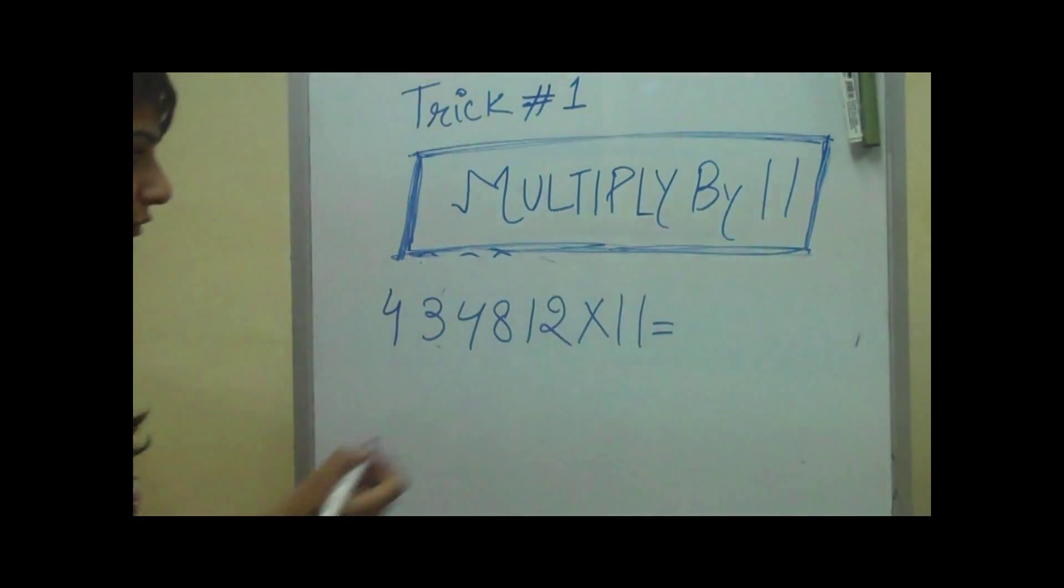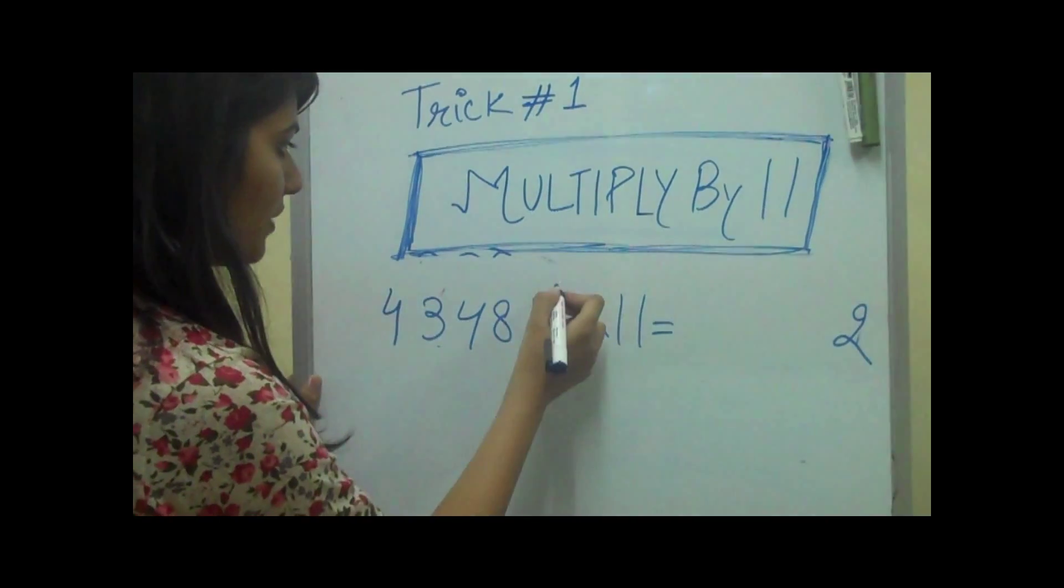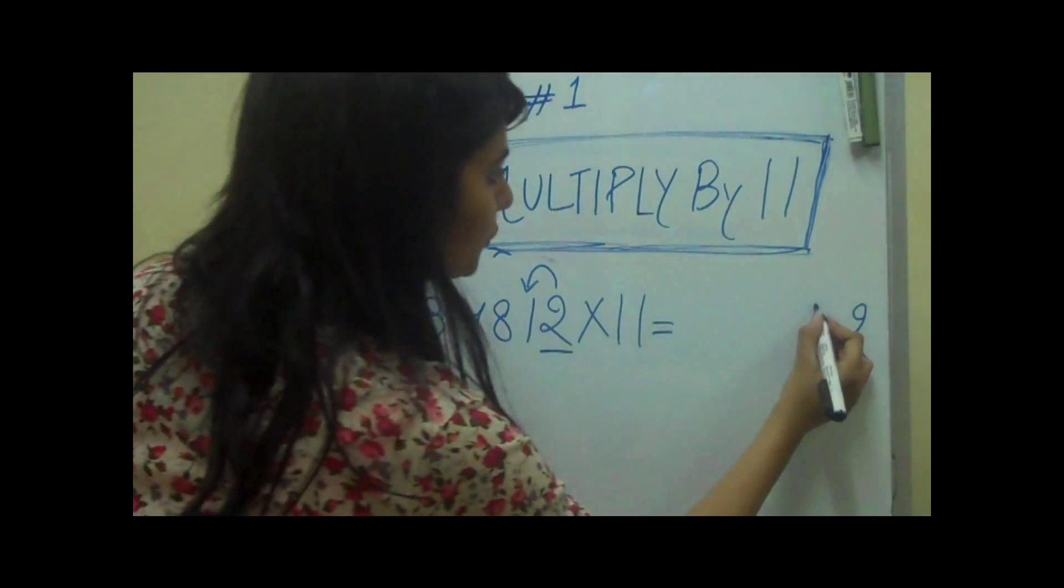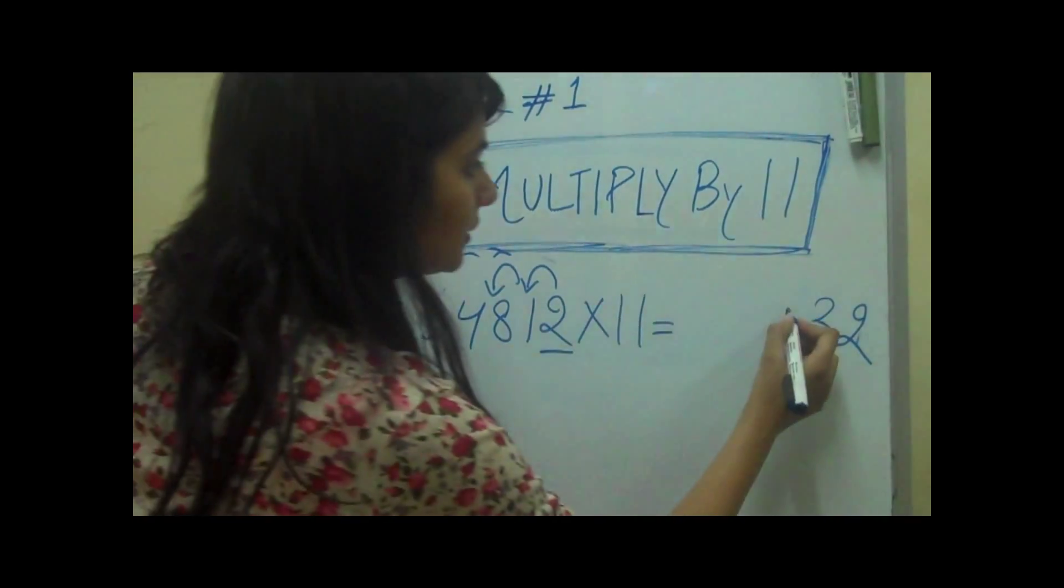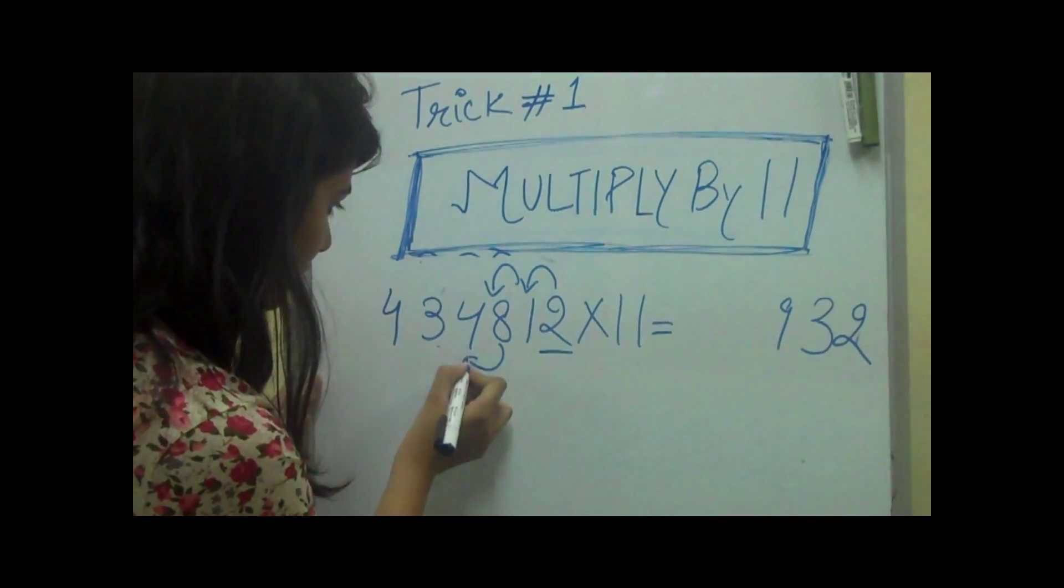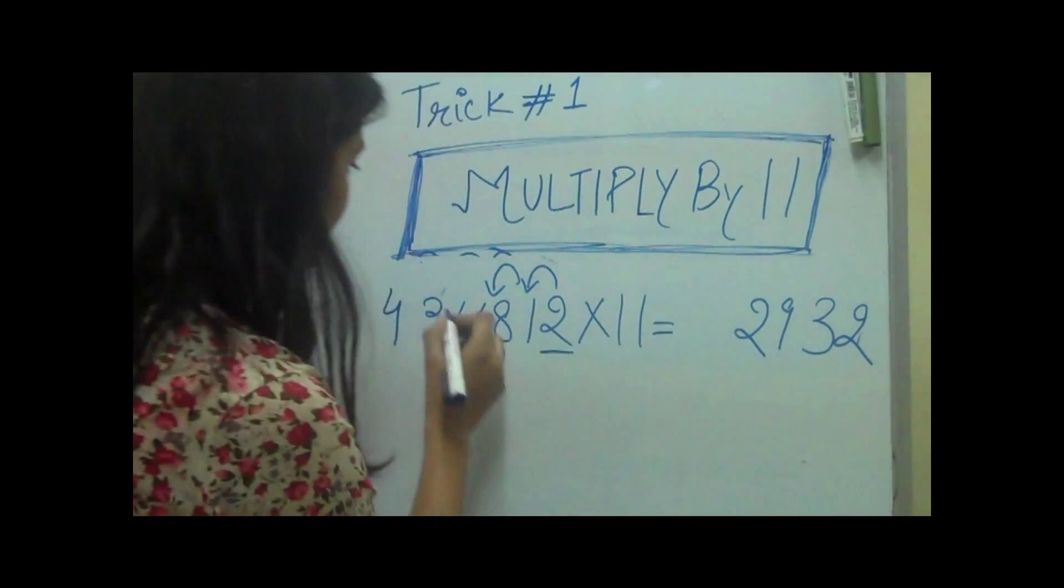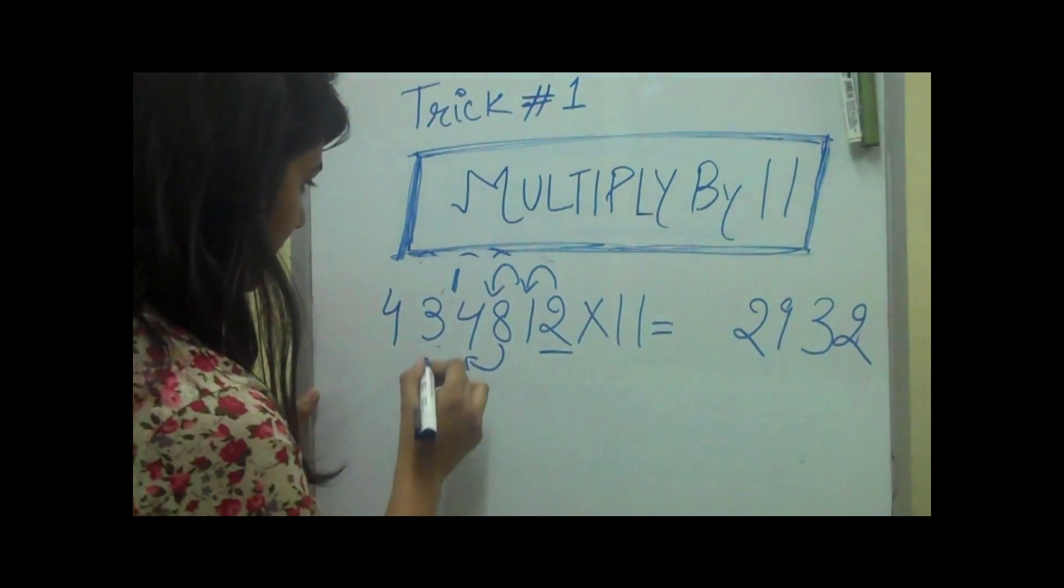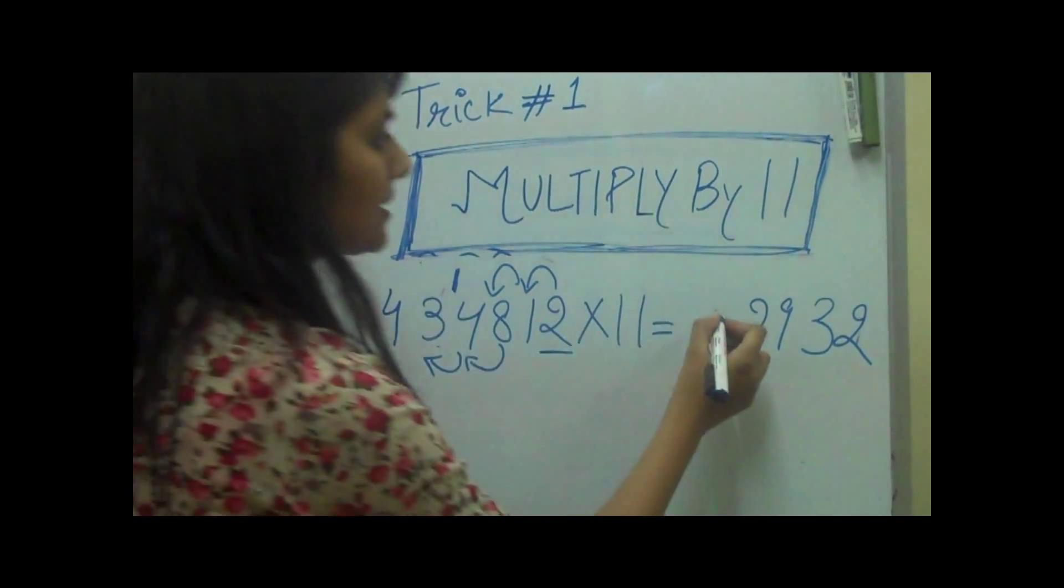434813 times 11. How you solve it in a few steps. First we put the first number as it is. Then we add the last two numbers, that is 3. Then we add these two numbers, 1 plus 1 is 9. Then we add these two numbers, 8 plus 4 is 12. We put 2 as it is and 1 carry over here. Then we'll add 4 plus 3 is 7, which plus 1 is 8.